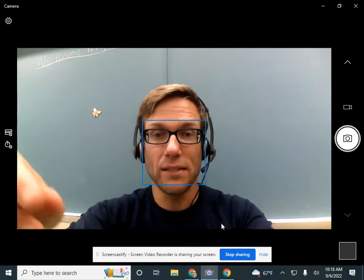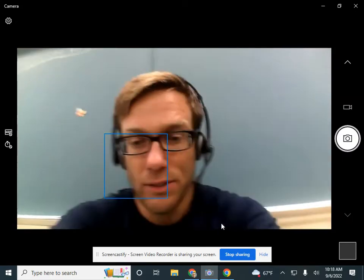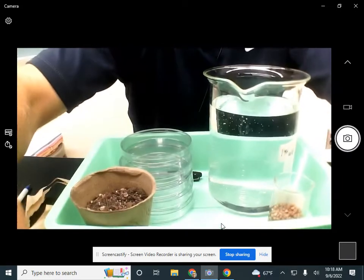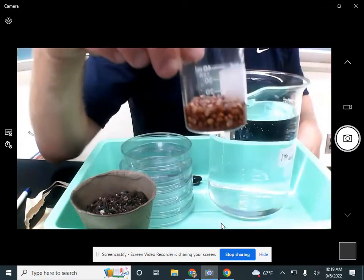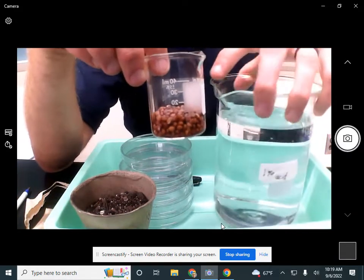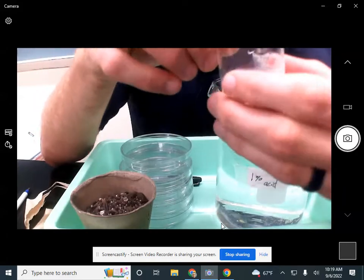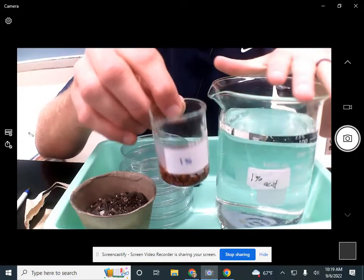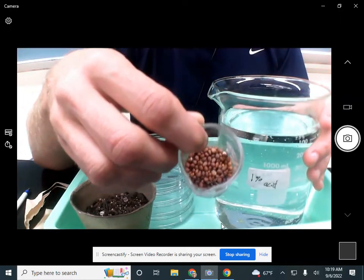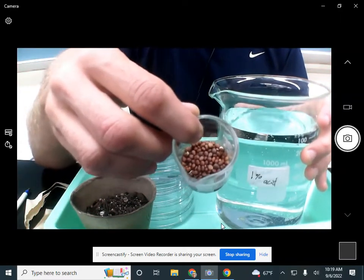And you also have several other things in this bin. Let me show you those right now. These are radish seeds that have been soaked in this acid concentration. So the 1% seeds have been soaked in 1% acid. Radish seeds were chosen because they germinate so quickly.